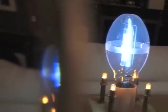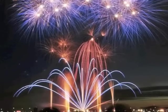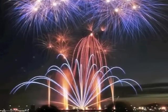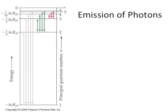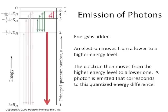What do discharge lamps, flame tests, neon lights, and fireworks have in common? All of these involve the emission of photons. In a previous experiment, you learned how the emission of photons gave insight into the electronic structure of hydrogen. In our model, electrons move from a lower to a higher energy level when the atom absorbs energy, and when the electron returns to a lower energy level, photons are emitted.